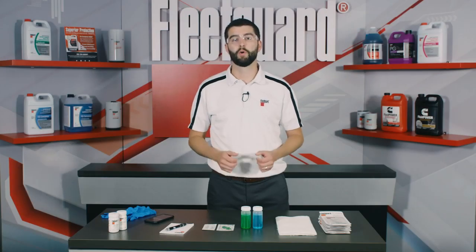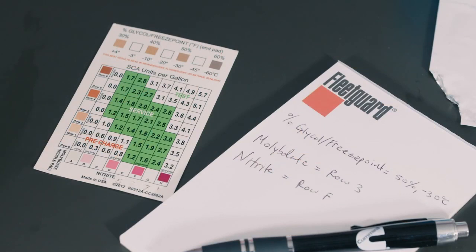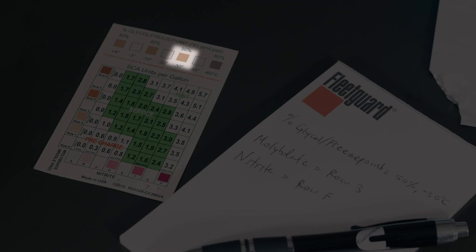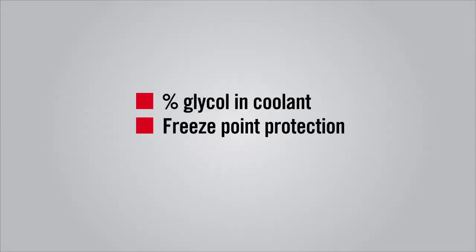The percent glycol chart is the most self-explanatory scale on the card, and as you've probably guessed, this scale provides an estimation of the percent glycol in the coolant as well as the associated freeze point protection provided by the coolant.